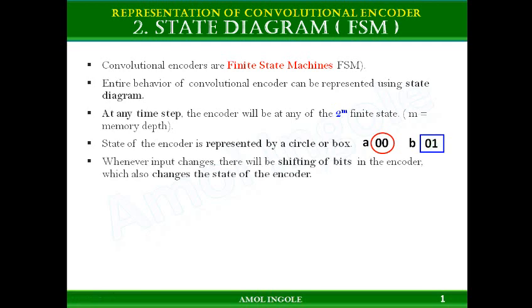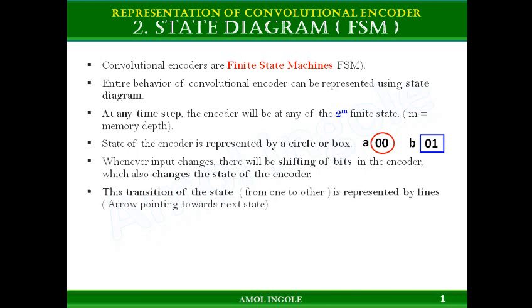Whenever the input changes there will be shifting of bits in the encoder, which also changes the state of the encoder. This change in state can be shown with lines with arrows pointing towards the next state. You can use a darker line with arrow when the input is 0, and when the input is 1 you can use a dotted line with arrow pointing towards the next state.